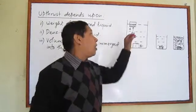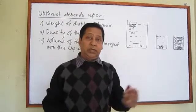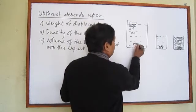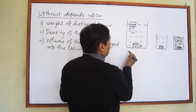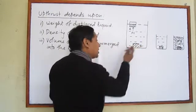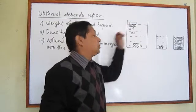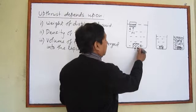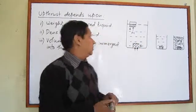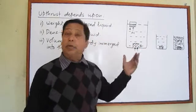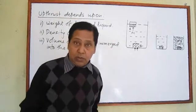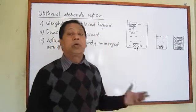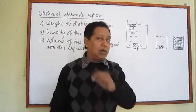Archimedes' principle says upthrust is equal to weight of displaced liquid. The second body is completely immersed in the liquid, so it displaces more — if the first displaces one Newton, here it may be two Newtons. So this body experiences two Newtons of upthrust. That's why upthrust depends upon weight of displaced liquid. More the liquid displaced, more will be the upthrust according to Archimedes' principle.